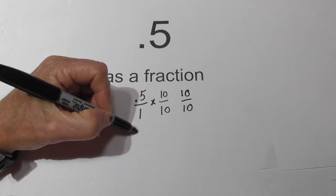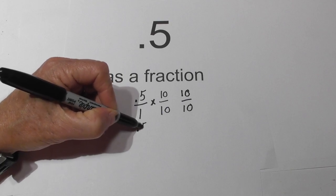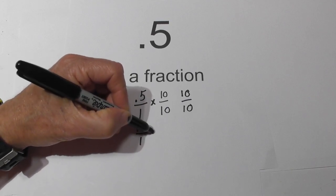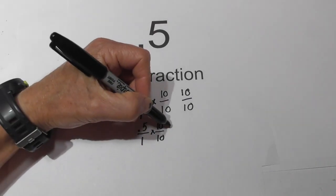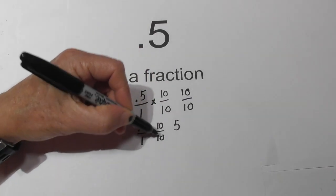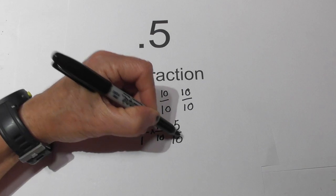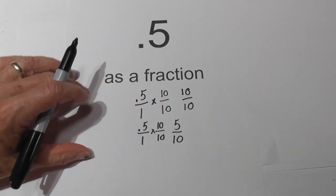Now let's redo this. We have 0.5 over 1 times 10 over 10. 0.5 times 10 is 5, and 1 times 10 is 10. So we have the fraction 5 tenths.